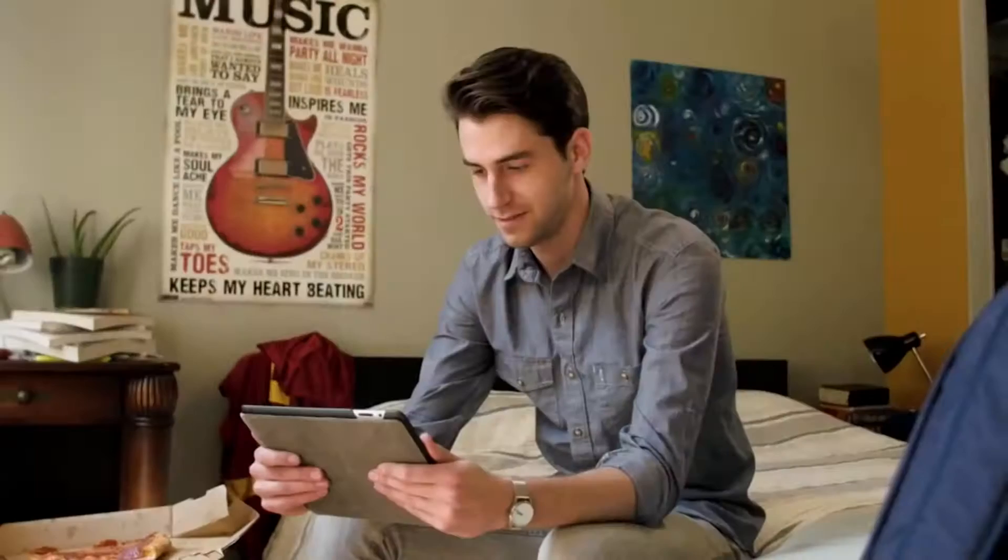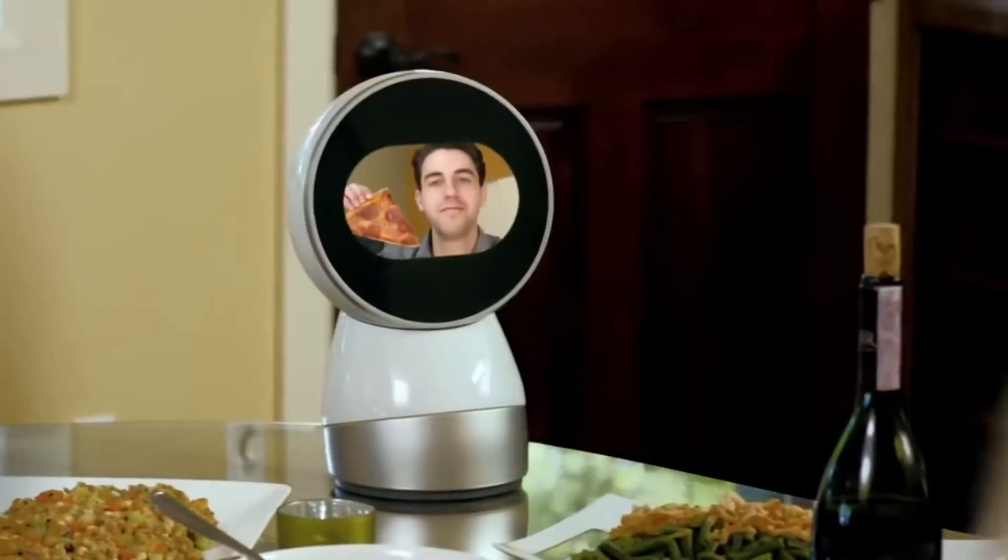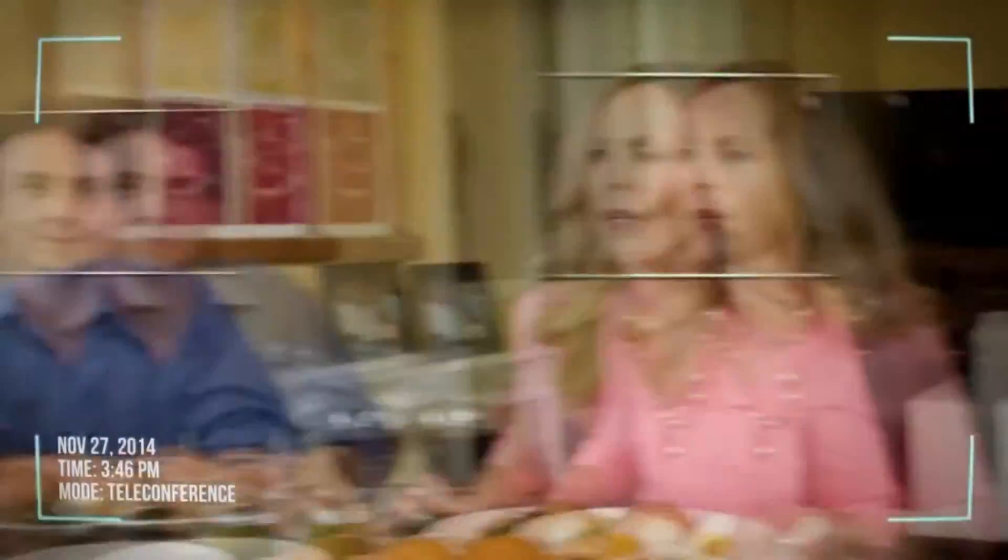Apart from the main features, Jibo can be used as means of communication as the robot has an inbuilt camera that allows you to make audio and video calls.